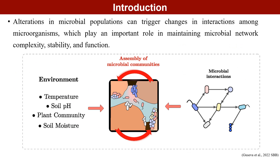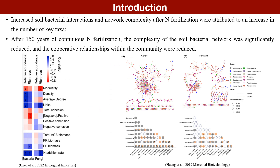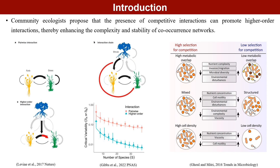Alterations in microbial populations can trigger changes in interactions among microorganisms, which play an important role in maintaining microbial network complexity, stability, and function. Microbial interactions consist of cooperation and competition, often related to abundance. However, some recent studies on microbial interactions with nitrogen enrichment have had mixed results. Some community ecologists have proposed that the presence of competitive interactions can promote higher-order interactions, thus enhancing the complexity and stability of co-occurrence networks.